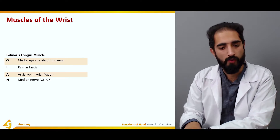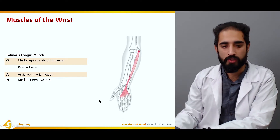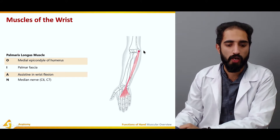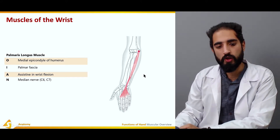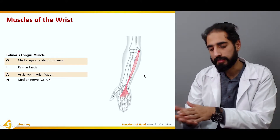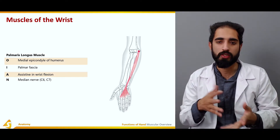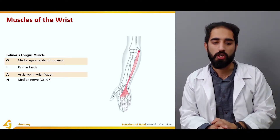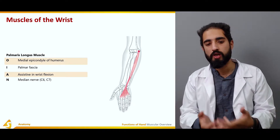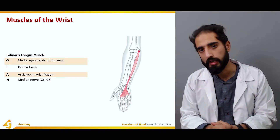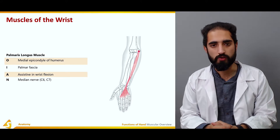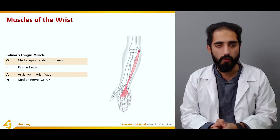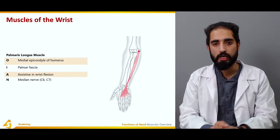The palmaris longus also originates from the medial epicondyle of the humerus, but inserts onto the palmar fascia at the center. Because it inserts centrally, it does not contribute to radial or ulnar deviation but does assist in wrist flexion alongside flexor carpi ulnaris and flexor carpi radialis. Like flexor carpi radialis, it is supplied by the median nerve.